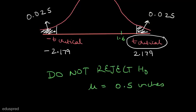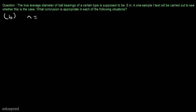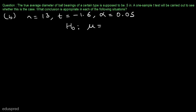Let's move to part B. In part B, we are given that n is equal to 13, t is equal to minus 1.6, and alpha is equal to 0.05. Our null hypothesis is the same: mu equal to 0.5, and our alternate hypothesis is mu not equal to 0.5. As we know, this is a two-tailed test, so let's draw the t-distribution once again.